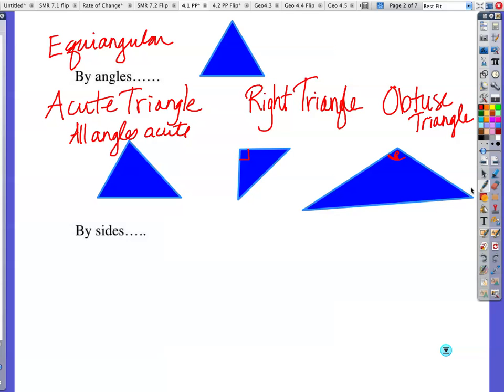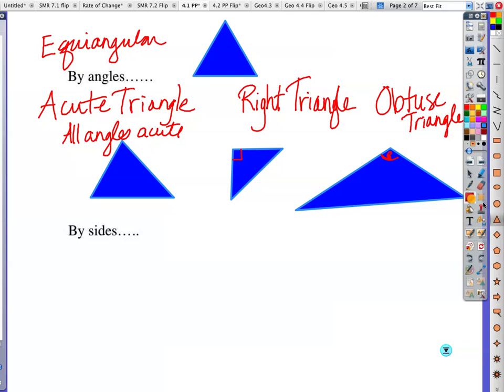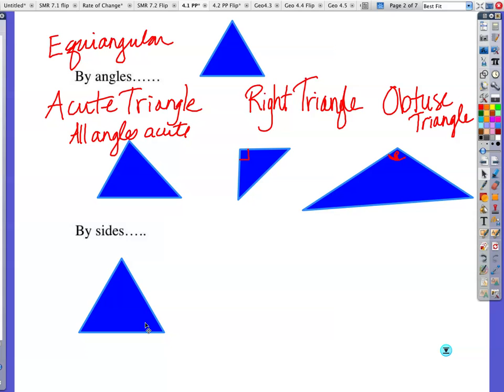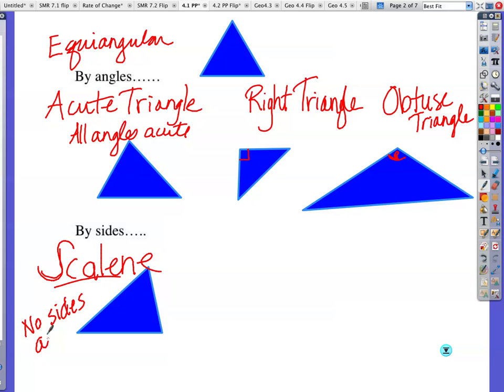Alright, if we classify by sides, we can have no sides be congruent. No sides that are congruent. Then it would look something like this. We're going to call those three different sides. The special word we use for that, I think this is the weirdest word, scalene. I don't know why I have to say it like that, but I just do. Scalene triangle. That's when no sides are the same. Since that's a new word, no sides are congruent.